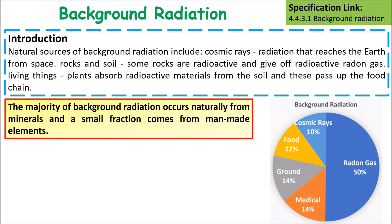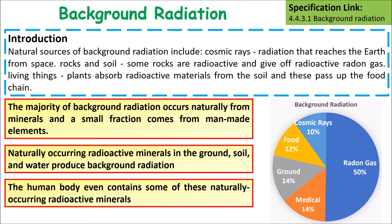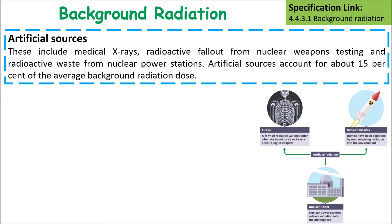A small fraction of background radiation comes from man-made elements. Naturally occurring radioactive materials in the ground, soil, and water produce background radiation, and the human body may even contain some of these naturally occurring radioactive materials.